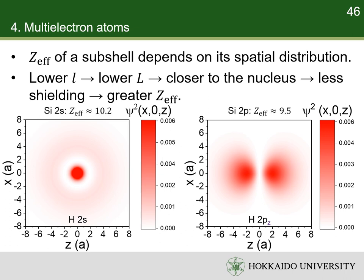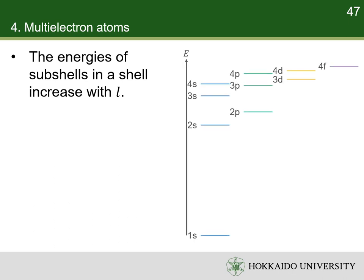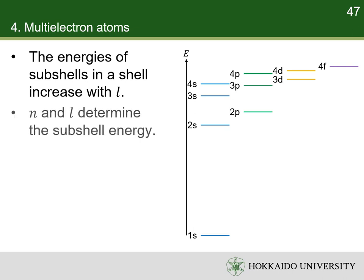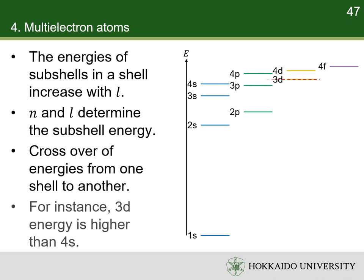For example, the effective atomic numbers of silicon's 2s and 2p subshells are 10.2 and 9.5, respectively. In a shell, the subshells' effective nuclear charges decrease with the azimuthal quantum number. Thus, in a shell, the subshells' energies increase with the azimuthal quantum number. Therefore, the azimuthal quantum number is a determining factor of energy, second only to the principal quantum number. There is some energy crossover from one shell to another. For instance, the 3d subshell has a higher energy than the 4s subshell.